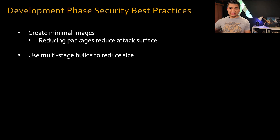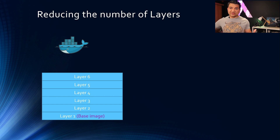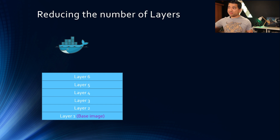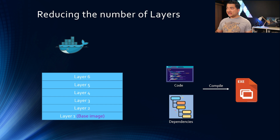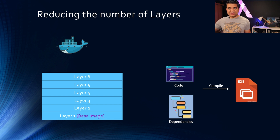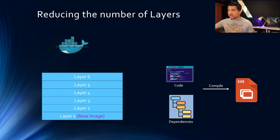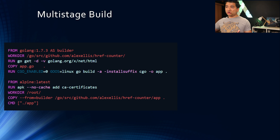Let's take a brief look at multi-stage builds. Generally, each line in your Dockerfile creates a layer in the Docker image, starting with the base image and each command adding a layer on top. But if you have code and dependencies that you compile into an executable, you really don't need the source code and dependencies in the final container image — the executable is sufficient to run your application. Using multi-stage builds, you can create a lightweight container with just the executable.